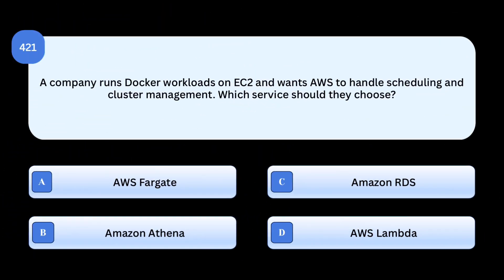A company runs Docker workloads on EC2 and wants AWS to handle scheduling and cluster management. Which service should they choose?